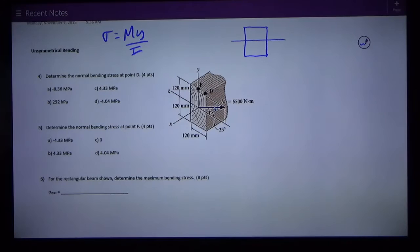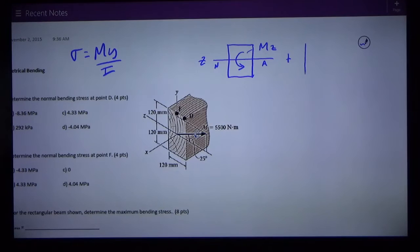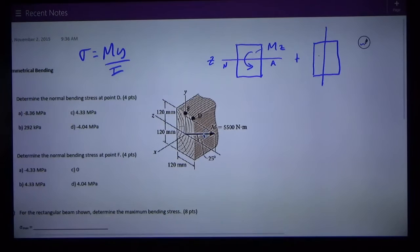We have bending about this axis which is the z axis. The z axis in that case is the neutral axis. Plus we have bending about the other axis which is the vertical axis or the y axis. The y axis becomes the neutral axis for that bending. We're going to break it up into two parts, look at where we have compression and tension and solve it that way.